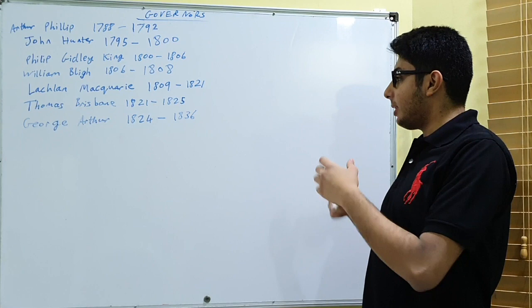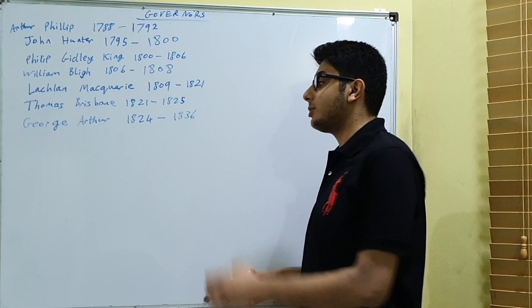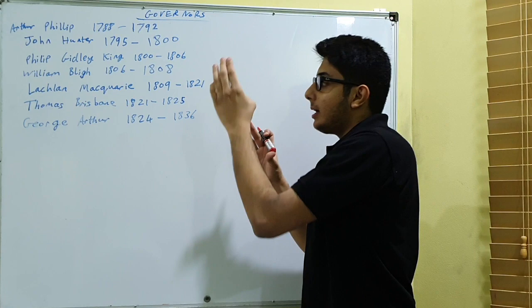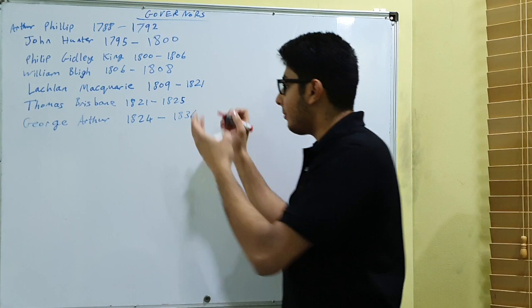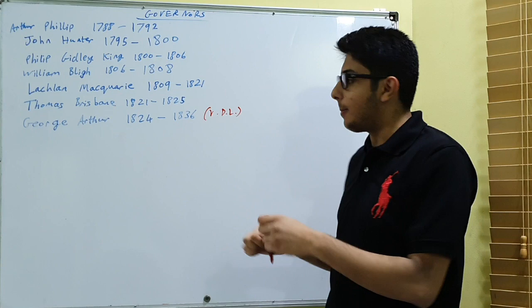Hello, I'm The Awesome Tutor and today we're going to be looking at the role of Governor George Arthur. What's different about Governor George Arthur in terms of comparing him to the other governors is that he did not govern New South Wales, so Australia. He governed Van Diemen's Land which was basically Tasmania.